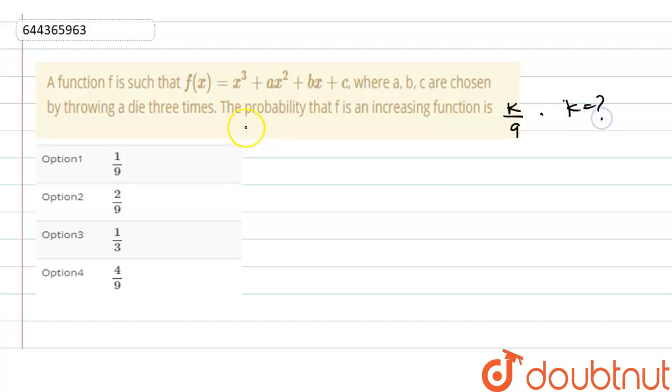Find k. A function f is such that where a, b, c are chosen by throwing a die three times, the probability that f is an increasing function is k/9, and we have to find the value of k.